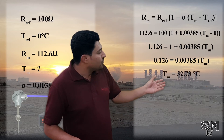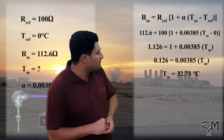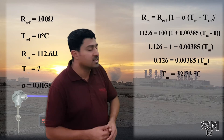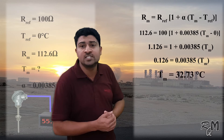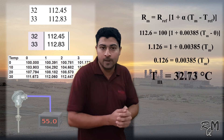Bringing the 1 to the other side, it subtracts and becomes 0.126 equals 0.00385 multiplied by the measuring temperature. Bringing this coefficient to the other side — it will divide. So you can see our measuring temperature is equal to 32.73 degrees centigrade.